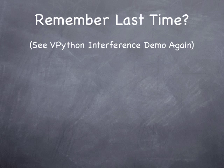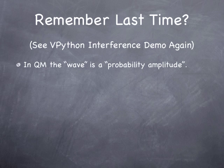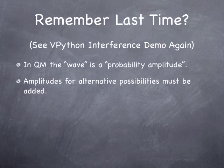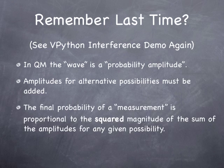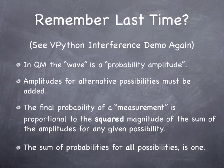I'm going to show the interference demo again to remind you of what it says. In quantum mechanics, the thing that waves is a probability amplitude. The amplitudes for alternative possibilities need to be added together: if something can go this way or that way and end up in the same final situation, those two amplitudes need to be added to get the total amplitude. The probability of a measurement is the squared magnitude of the sum of amplitudes for all alternative ways. And finally, the sum of probabilities of all possibilities must add up to one.